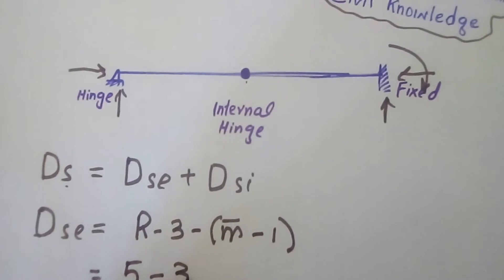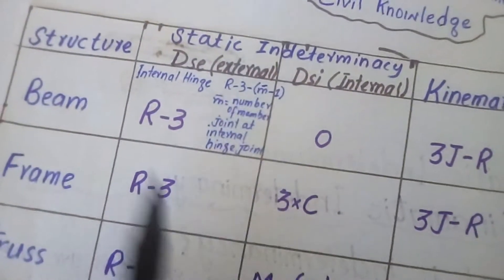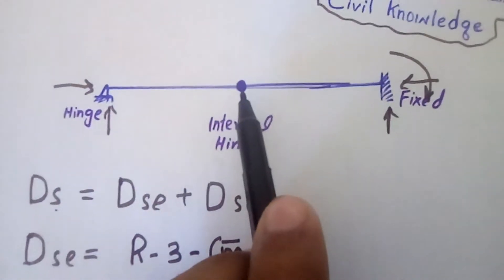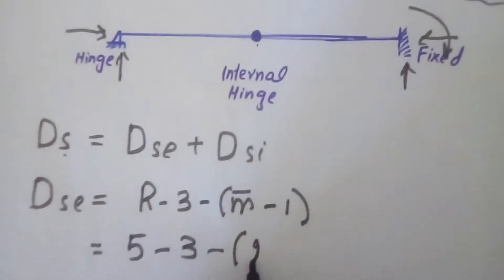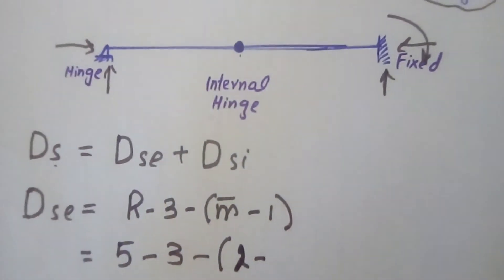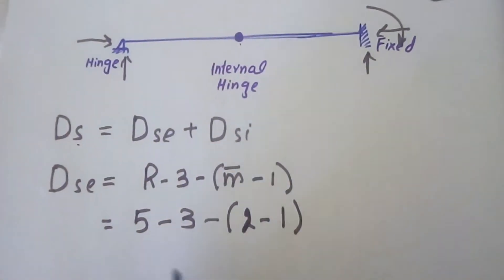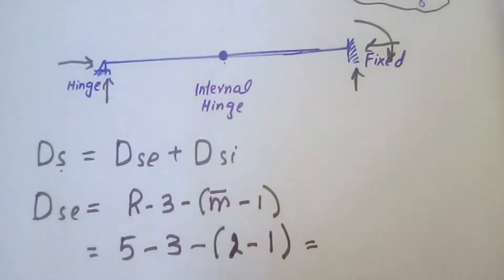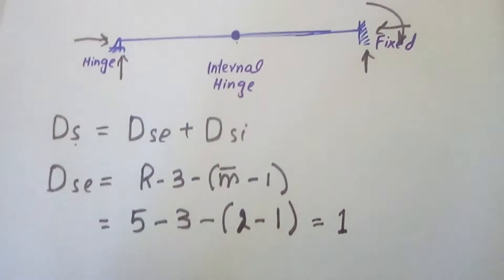There are five reactions, minus three. M' is the number of members jointed at the internal hinge — there are two members jointed at the internal hinge, this member and the other member. So M' equals two. By solving: 5 − 3 − (2 − 1) = 1. So our external static indeterminacy for this beam is one.